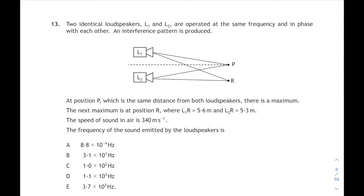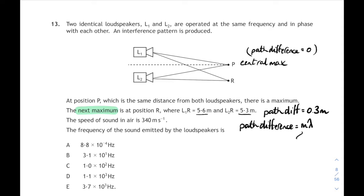Two identical loudspeakers are operated at the same frequency and in phase, and an interference pattern is produced. Position P is the central maximum, where the path difference is 0. The next maximum is at position R, where L1 to R is 5.6 metres and L2 to R is 5.3 metres. So we can work out the path difference between those two waves at 0.3 metres. Path difference to a maximum is always a whole number of wavelengths. M lambda is how that's written. Position R is the first maximum, so M equals 1. So the path difference equals one wavelength, and that will be 0.3 metres.